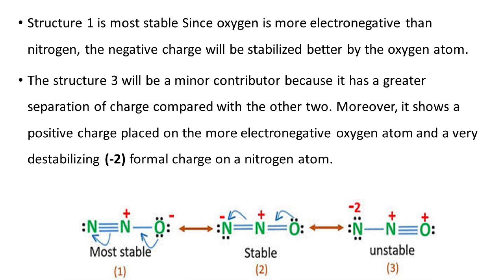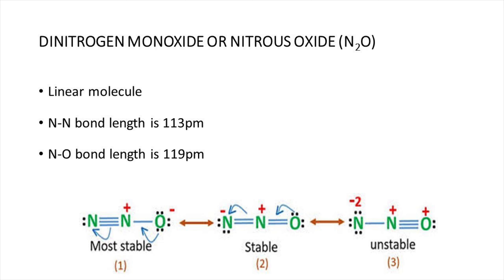Structure 3 is a minor contributor because it has a greater separation of charge compared with the other two. Moreover, it shows a positive charge placed on the more electronegative oxygen atom and a very destabilizing minus two formal charge on the nitrogen atom. Dinitrogen monoxide is a linear molecule. The nitrogen-nitrogen bond length is 113 picometers and the nitrogen-oxygen bond length is 119 picometers.